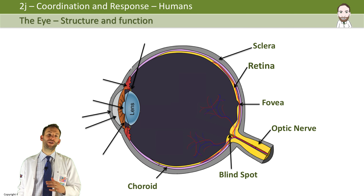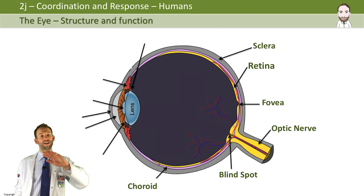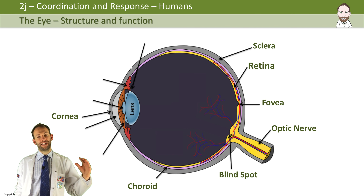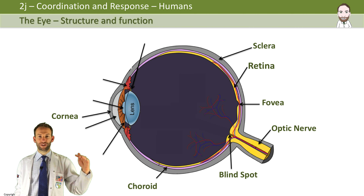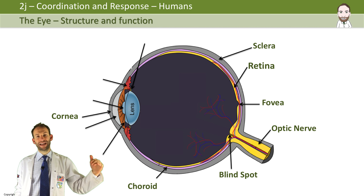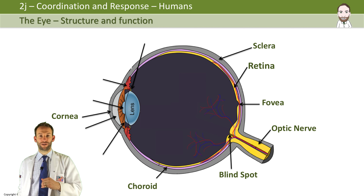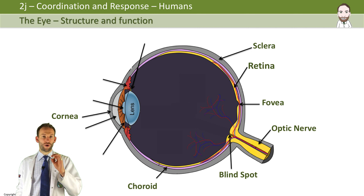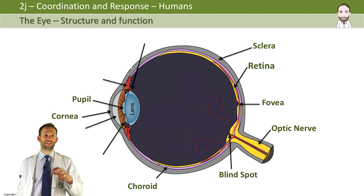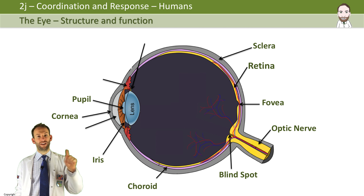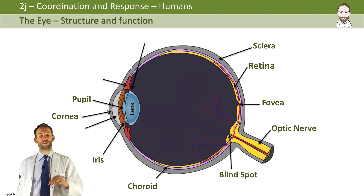Moving to the front of the eye, we can look at a few structures. The cornea is that curved front section — it's transparent — and it's where light first enters the eye. It's curved to help start bending the light; it refracts the light so that it focuses nicely at the back of the eye. The pupil is the dark hole where light can enter and get into the main part of the eyeball, and the size of the pupil is controlled by the iris — the colored part of the eye — which is made up of muscles that can get bigger or smaller to change the size of the pupil.